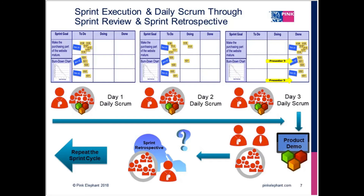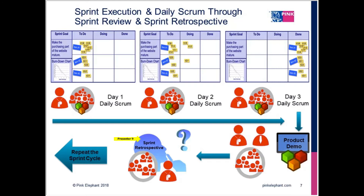At the end of the sprint, all three roles attend the product demo along with stakeholders. The team demos working, finished software — no PowerPoint slides — and stakeholders confirm it's done and what they wanted. Items can then potentially be deployed. After the sprint review, the team does the sprint retrospective: approximately four hours for product demo and three hours for retrospective in a two-week sprint. The development team does continual learning — inspect, adapt, and be transparent. Then the next sprint cycle begins, and this continues until the product is finished.